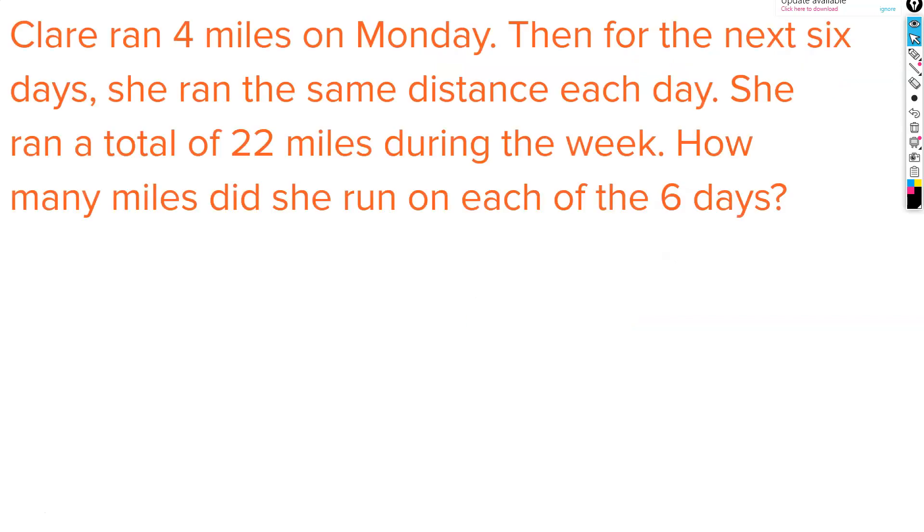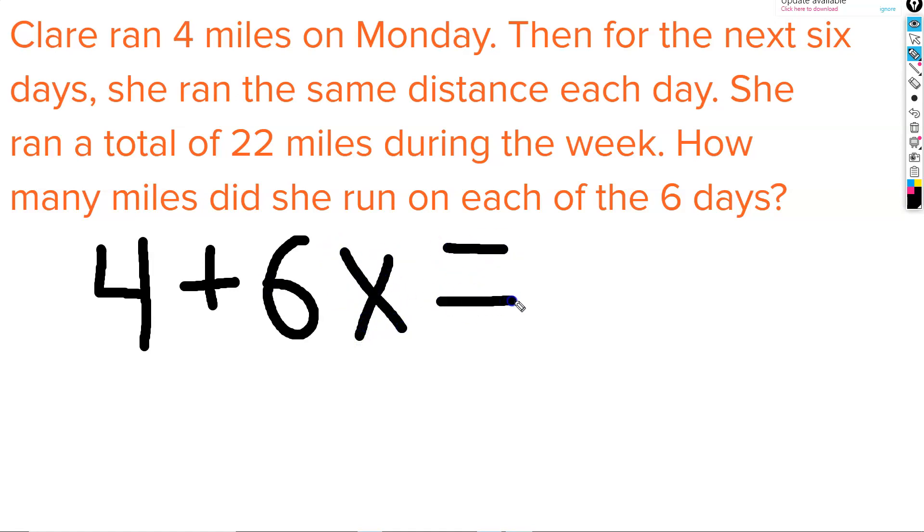Claire ran 4 miles on Monday. Then for the next 6 days, she ran the same distance each day. She ran a total of 22 miles during the week. How many miles did she run on each of the 6 days? In this problem, we ran 4 miles in one day, and then for 6 days, we ran an unknown distance, which we will represent with x, and this totaled 22 miles.